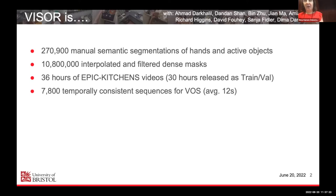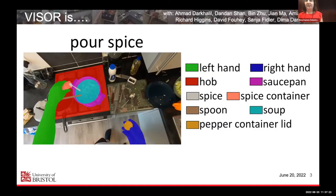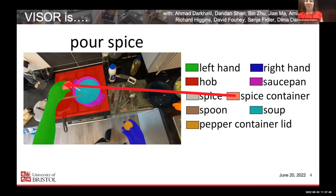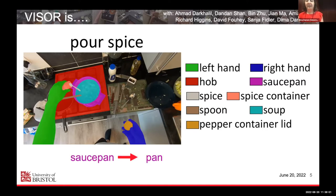Here's an example of an Epic Kitchens image annotated as part of the VISOR annotations and benchmark. We have a semantic label for each entity — the left hand, the right hand, and every other object such as the hob, saucepan, spice being added, spice container, spoon (which is partly occluded), the soup, and container lid. Each entity also has an open vocabulary name, a closed vocabulary class (e.g., saucepan to pan), and a macro class or category like cookware.